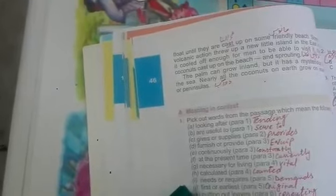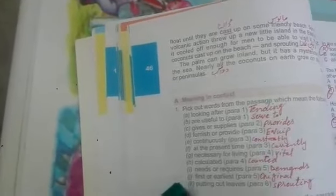Number J: needs or requires. Answer is demands. I: first or earliest. Answer is original. K: putting out leaves. Answer is sprouting. Second exercise is explain each expression as it used in the passage.